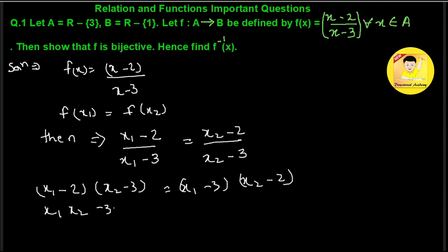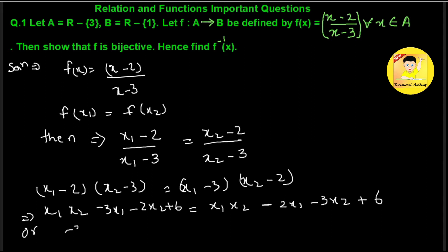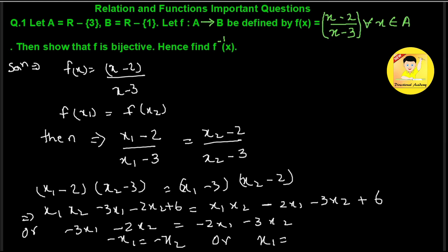Expanding both sides: x1·x2 - 3x1 - 2x2 + 6 = x1·x2 - 2x1 - 3x2 + 6. Simplifying, we get -3x1 - 2x2 = -2x1 - 3x2, which gives us x1 is equal to x2. Therefore, f is a one-to-one function. This is our first part answer.